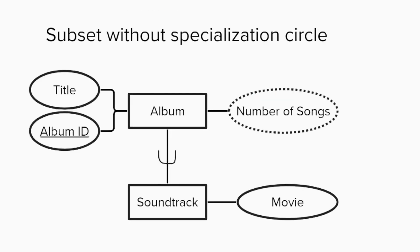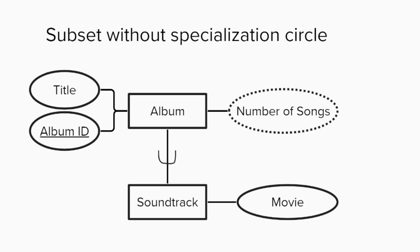In addition to overlapping and disjoint subsets, it is possible to have a subset without a specialization circle to indicate that some instances of an entity fall into a particular subentity. An example for albums would be movie soundtracks, which are just like regular albums except that they are also associated with a movie attribute.